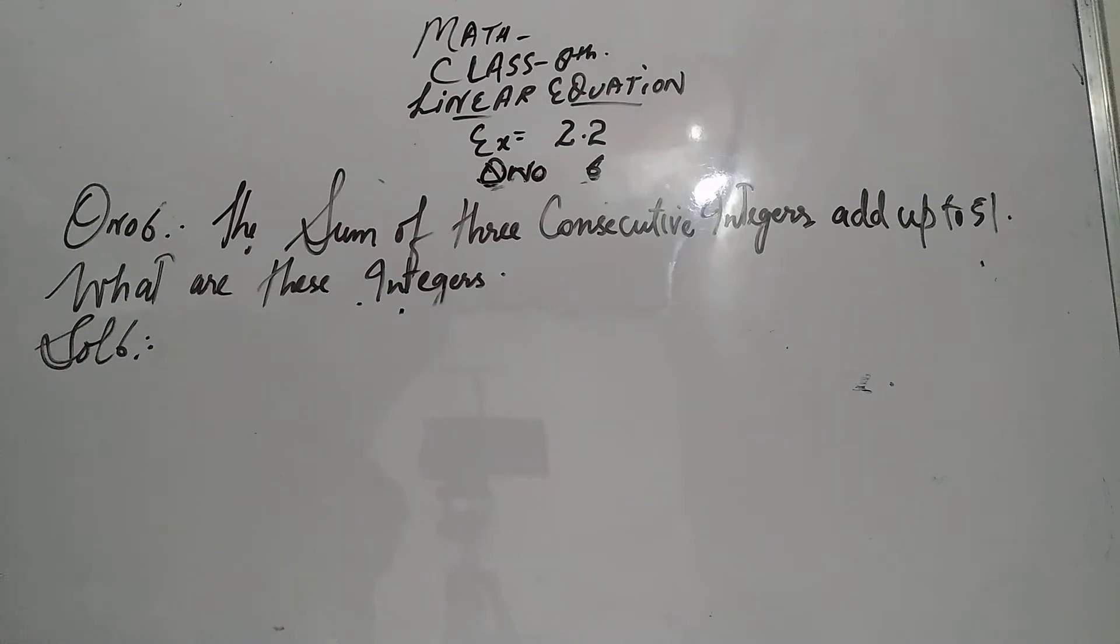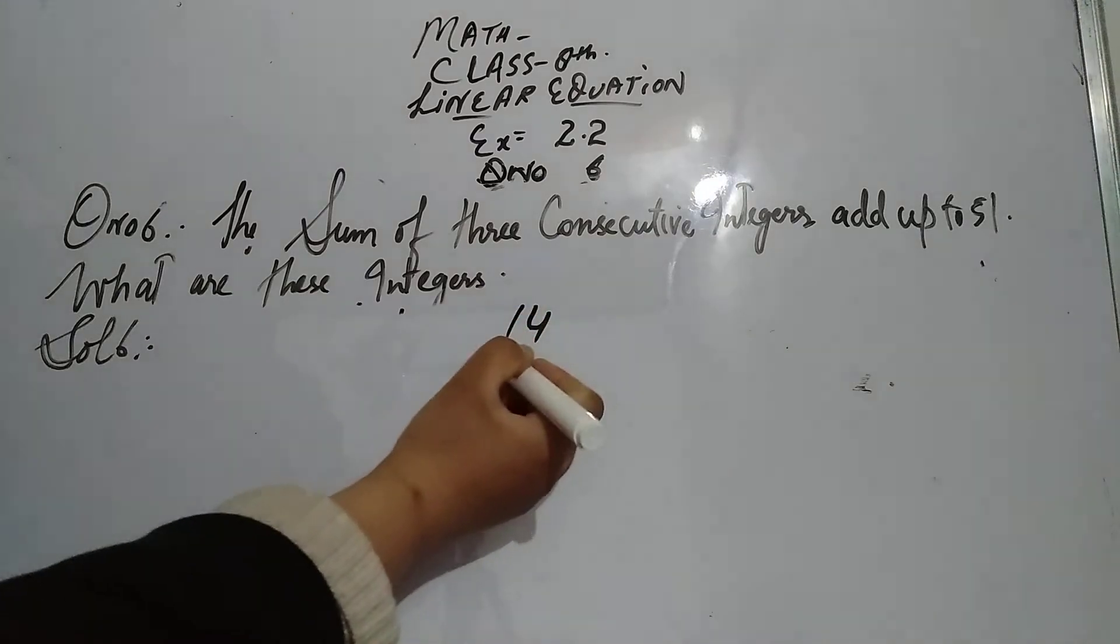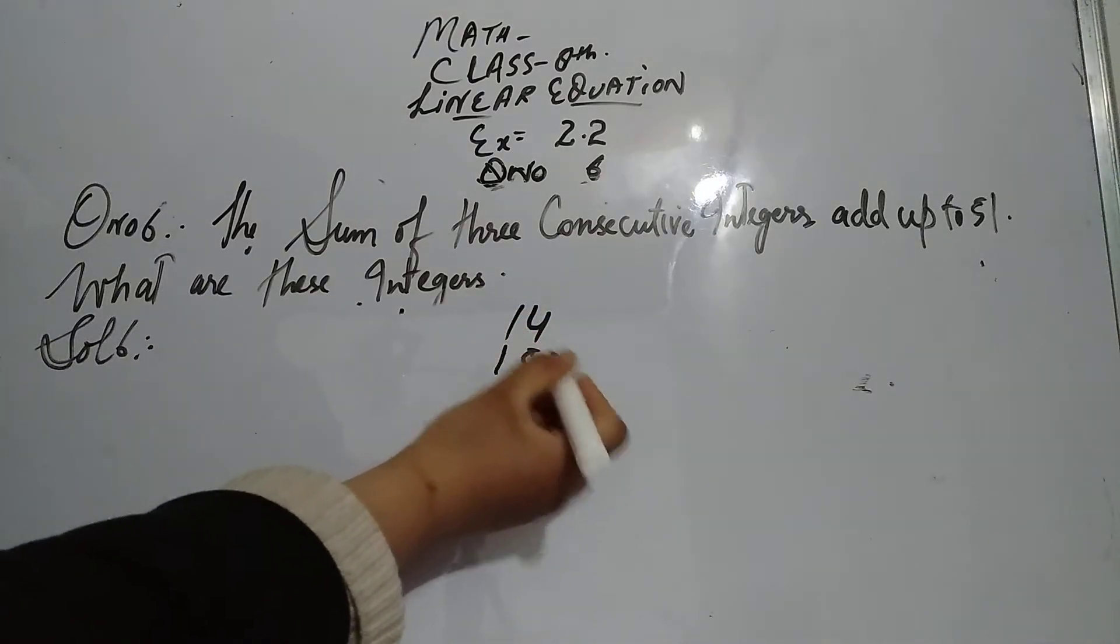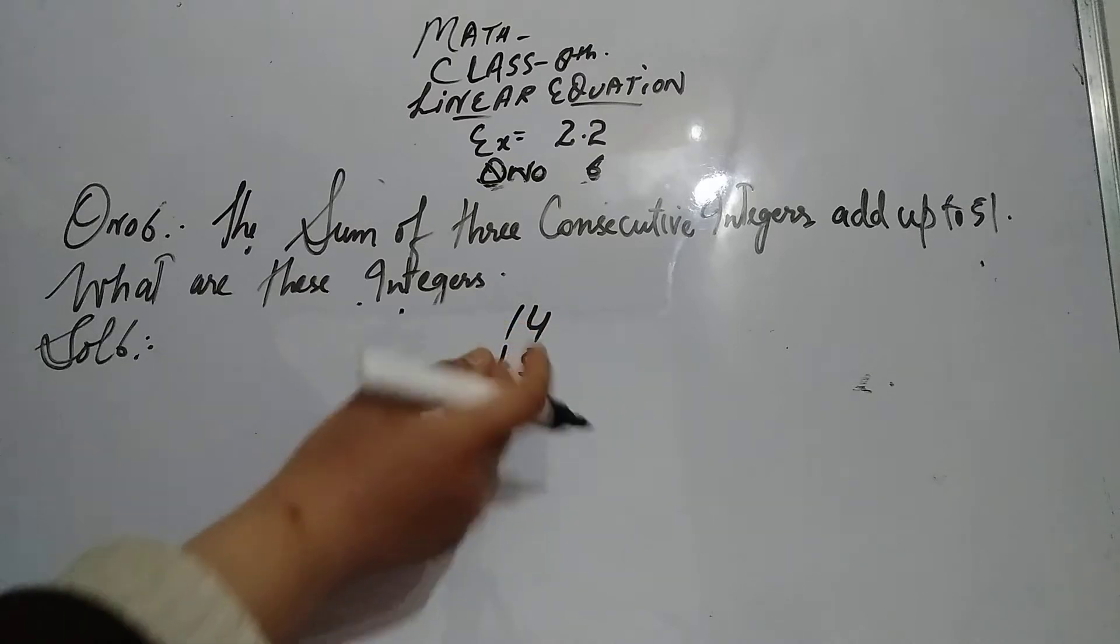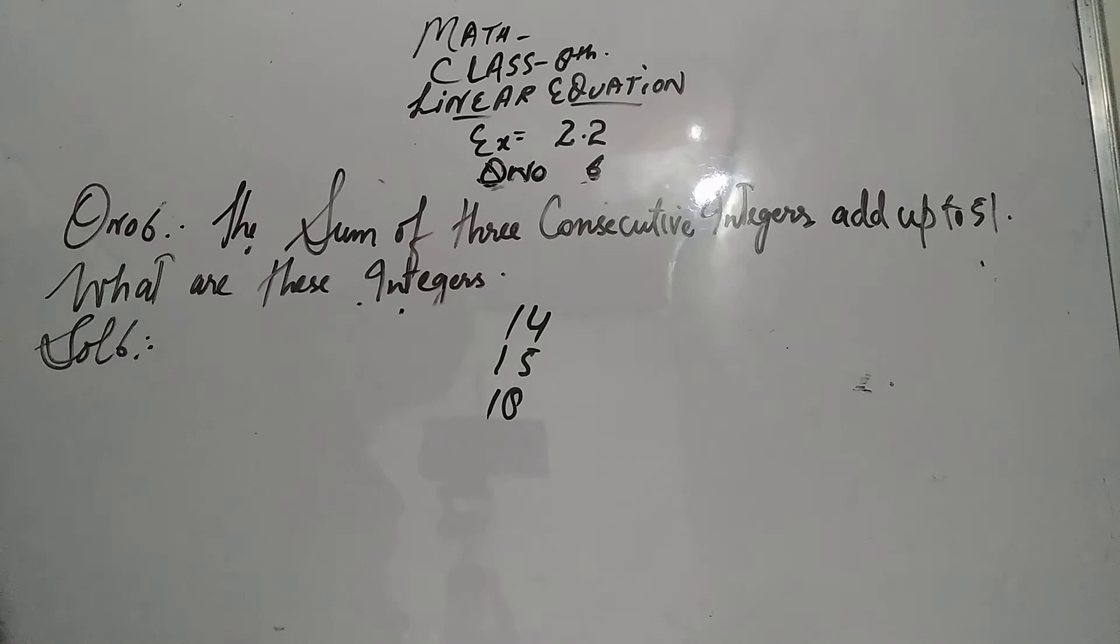Fifty-one can come from many combinations - 14 plus something, 15 plus something - but we have to choose numbers that come consecutively, one after another.